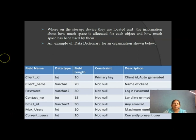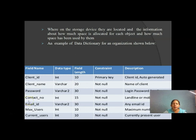On our screen, we have shown a data dictionary connected to an organization. It has columns called Field Name, Data Type, Field Length, Constraints, and Description. In the Field Name column, we have: Client ID, Client Name, Password, Contact Number, Email ID, Maximum Users, and Current Users — these are our field names.